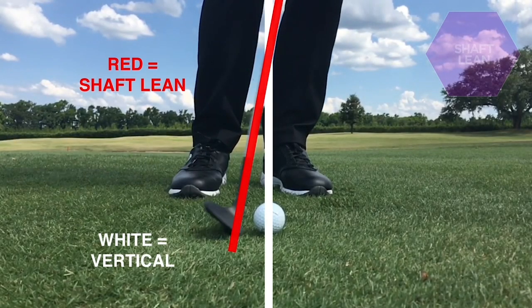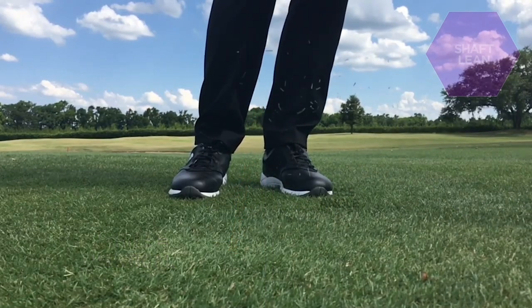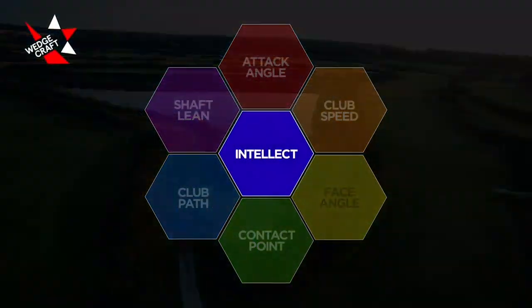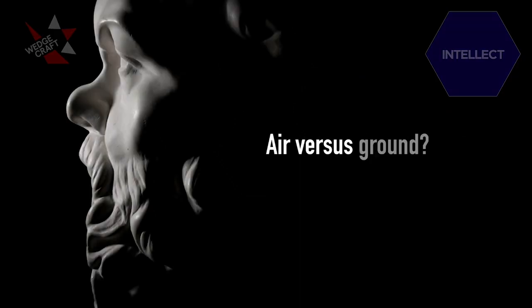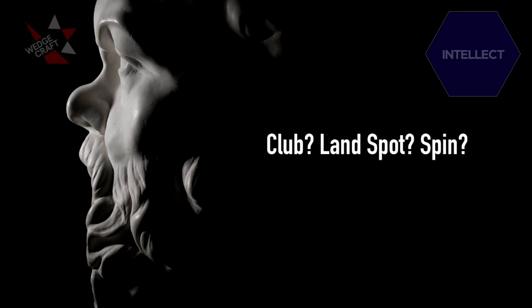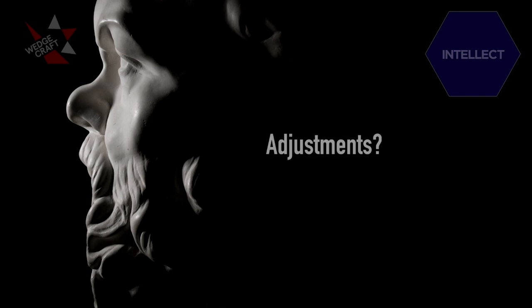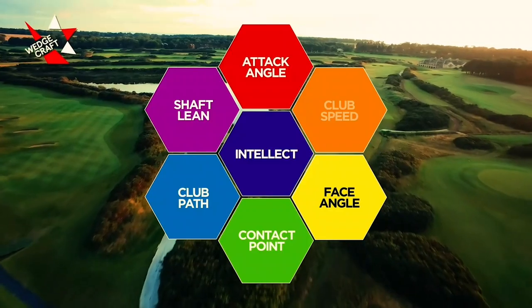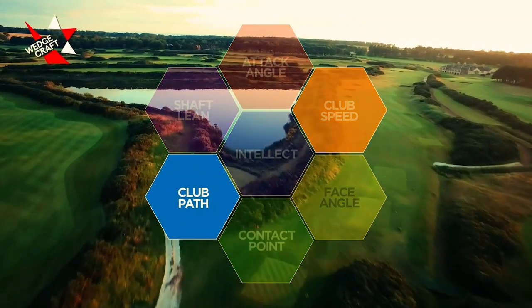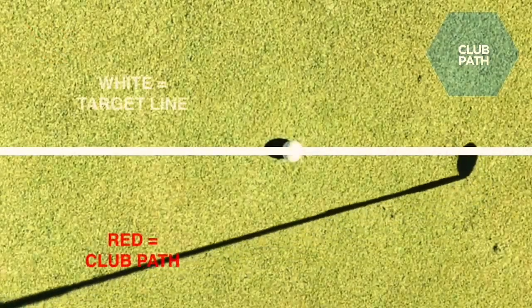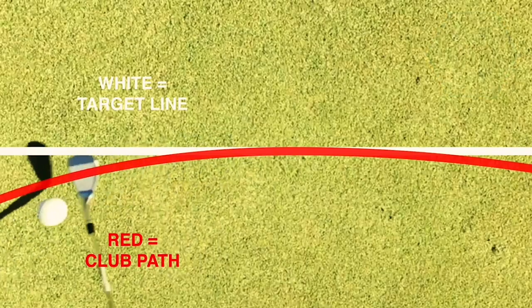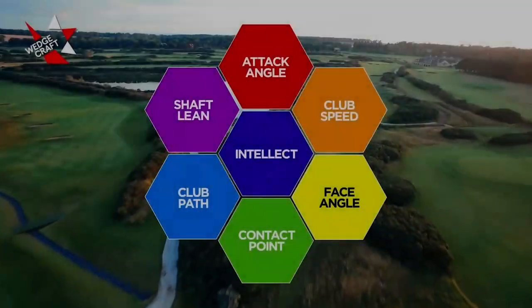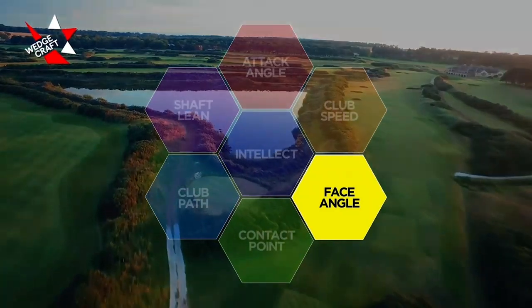Shaft lean is really crucial in all forms of wedge play, but in particular in distance wedges, because the amount of shaft lean dictates how much loft you deliver to the shot, and that is highly correlated to how far the ball will go. Being able to choose the right shot in the appropriate situation will really help you become a better wedge player and save shots during your round. Club path is the direction the club is moving when it strikes the ball — the white line indicates the target line and the red arc is an indication of the club path, showing where on that arc you strike the ball.